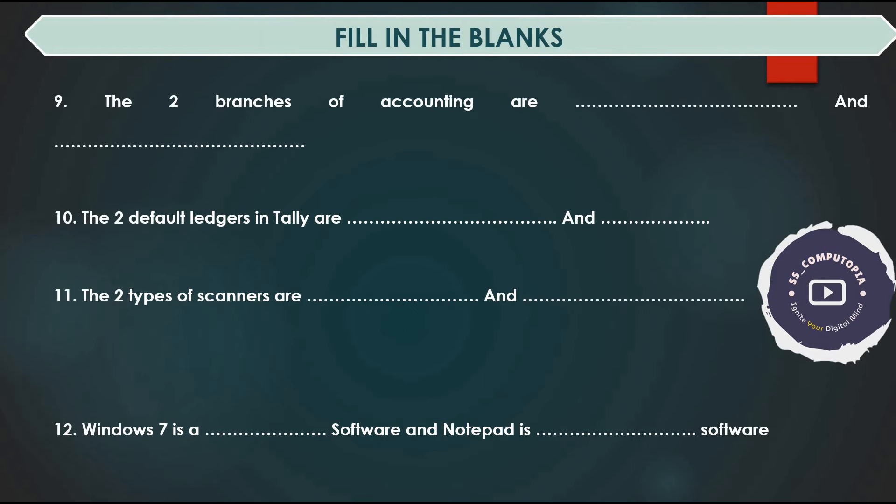The two branches of accounting are dash and dash. The two default ledgers in Tally are dash and dash. The two types of scanners are dash and dash. Windows 7 is a dash software and Notepad is a dash software.